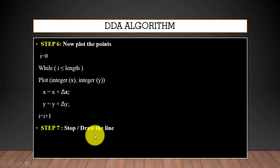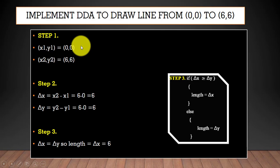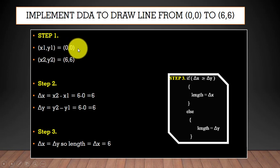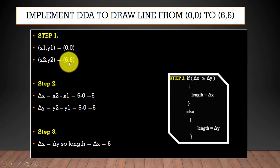Now let's see this using a numerical example. We will implement the DDA algorithm to draw the line from (0, 0) to (6, 6). In step 1 we read the points. We have two end points: (0, 0) and (6, 6). So the values are: x1 = 0, y1 = 0, x2 = 6, y2 = 6.